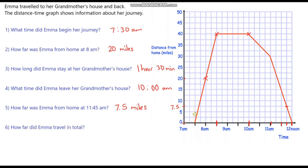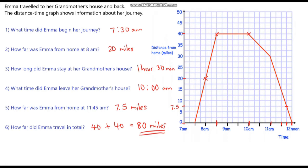The last question: how far did Emma travel in total? To go to her grandmother's house was 40 miles, and then she came straight back — another 40 miles. So it's 40 plus 40, which gives us 80 miles. In total she travelled 80 miles. Let's do one more of these — I'm going to show you one more distance time graph with a few questions for you to answer.